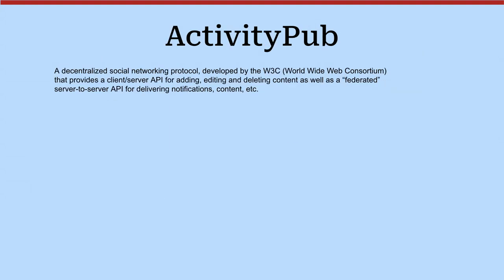ActivityPub is a decentralized social networking protocol developed by the W3C. It provides a client-server API for adding, editing, and deleting content, as well as a federated server-to-server API.